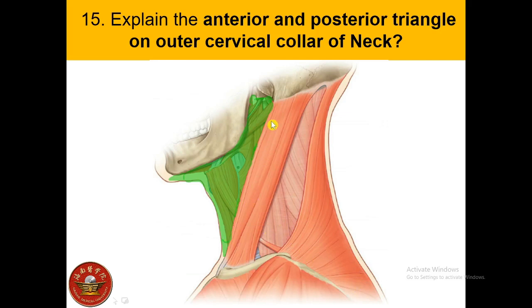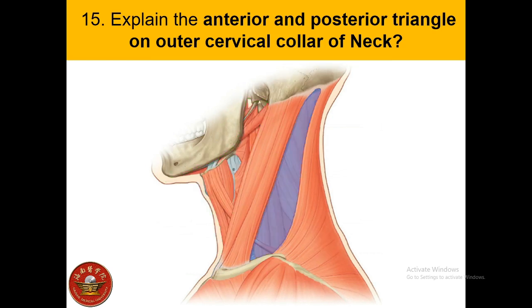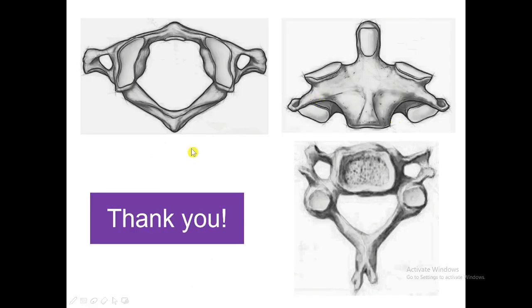The anterior triangle of the neck is bounded by the median vertical line of the neck, the inferior margin of the mandible, and the anterior margin of the sternocleidomastoid muscle. The posterior triangle of the neck is bounded by the middle one-third of the clavicle, the posterior margin of the sternocleidomastoid muscle, and the anterior margin of the trapezius muscle.